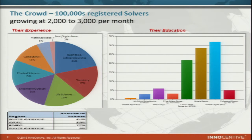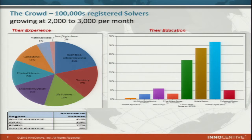Who are these people? Any of you in this room could potentially be solvers — go to the site and sign up if you're interested in problem solving. They're spread across the world: America, Asia Pacific, Europe and the Middle East, with South America growing particularly fast. Their skills are diverse: chemistry, physical sciences, life sciences, engineering, mathematics, statistics, and business. We can take advantage of what they can offer — it's a diverse community.